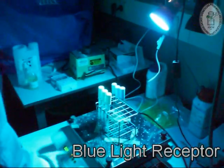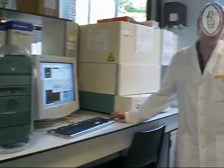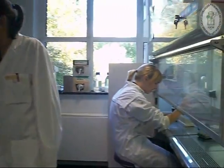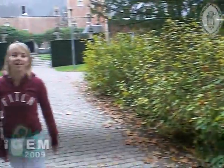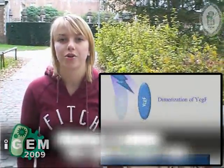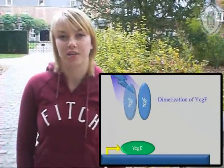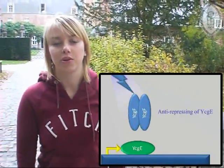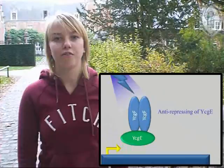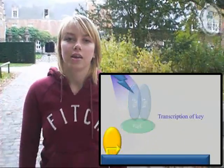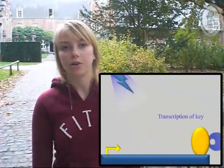Let's go into the blue light receptor some more. You mentioned that it was built from scratch — how does this work? When the cell is irradiated with blue light, it starts the transcription of what we call the blue key. Usually the blue light promoter is blocked by YCGE, a repressor. But when the cell senses blue light, it dimerizes YCGF, making it an activator. This activator can then bind YCGE, clearing the promoter, and transcription of the blue key can start.